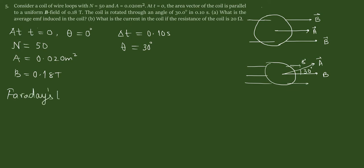Faraday's law tells us that emf is given by minus n delta phi over delta t and this is the change in flux that produces the emf.